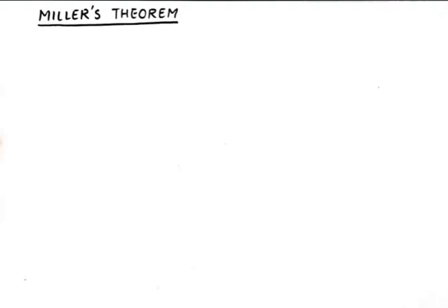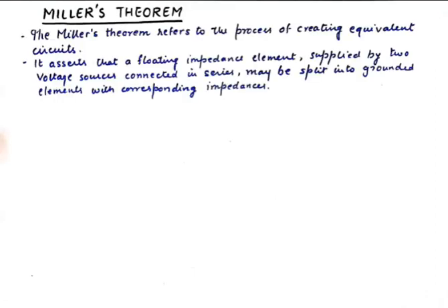Let's look at the statement of Miller's theorem first. The Miller theorem refers to the process of creating equivalent circuits, and it asserts that a floating impedance element supplied by two voltage sources connected in series may be split into grounded elements with corresponding impedances. That's the theoretical definition, but to understand it properly we need to see its implementational areas.